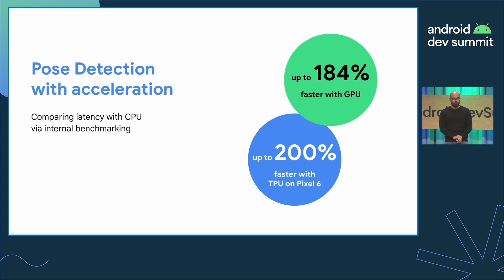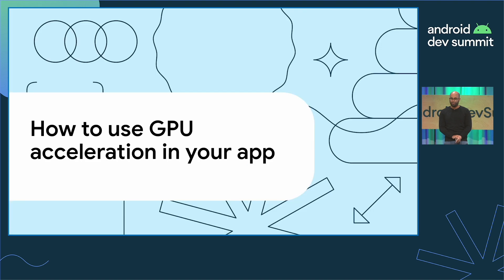There are models even more optimized for GPU acceleration. For instance, using MobileNet, an image classification model, you can see up to 10x latency improvements. If you're using ML Kit, you don't need to do anything — ML Kit is already configured to get you the best performance on the current device. But if you want more control, let's review the steps to add GPU acceleration for TensorFlow Lite with Google Play Services to your application.